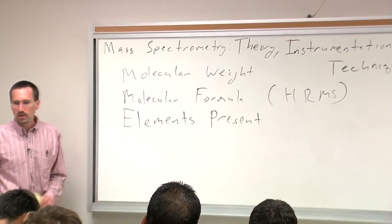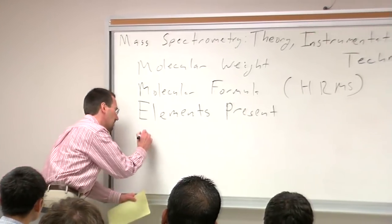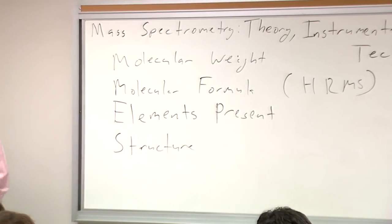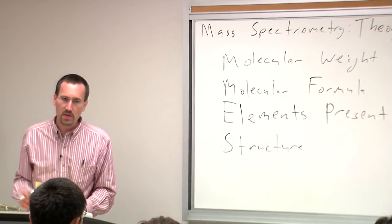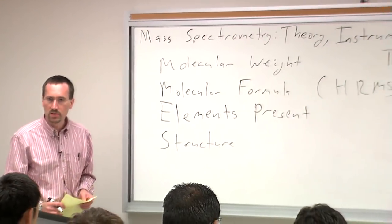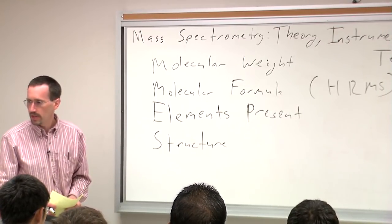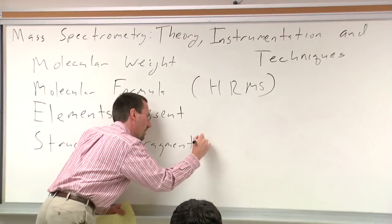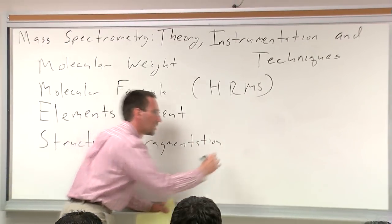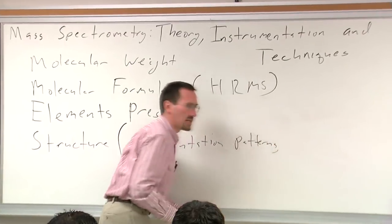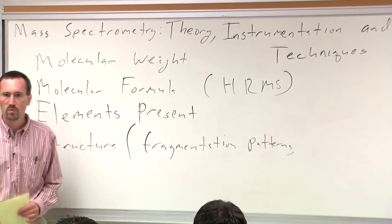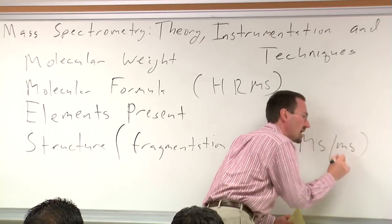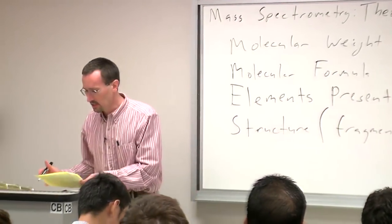These days mass spec can also be incredibly valuable in getting structure. It has become central to biomolecular mass spectrometry — for sequencing peptides and proteins, but also for more traditional organic structures and natural products. You can get structure through fragmentation patterns, which we'll talk about in our third lecture. In biomolecular cases, through techniques like MS/MS, you're actually taking ions and deliberately colliding them to see how they break up.